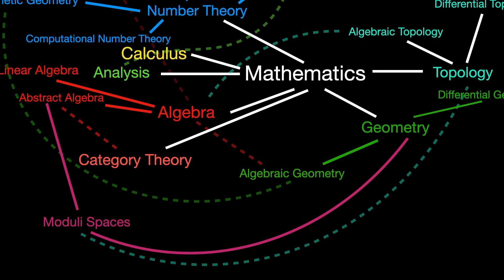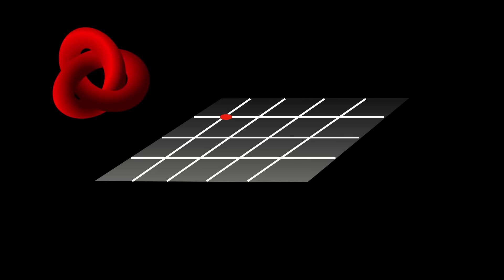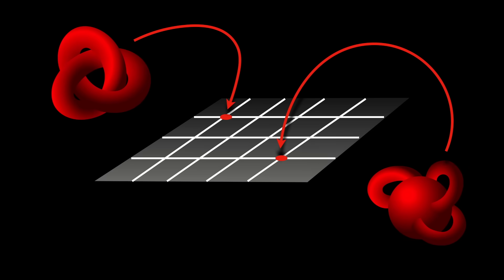Moduli spaces. Moduli spaces allow for the geometric classification of objects like curves, surfaces, and more abstract structures by treating them as points in a geometric space. The approach of moduli spaces simplifies our understandings of these objects and makes their manipulation much easier.